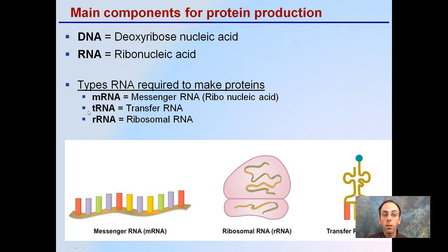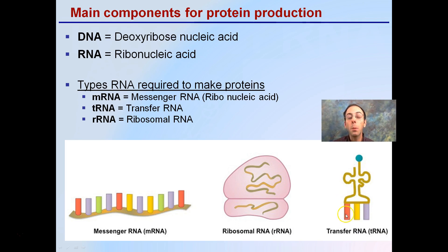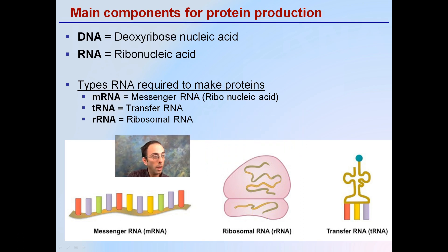Starting with the main components for protein production, there are three key components of RNA that are required to make proteins. mRNA stands for messenger RNA. It's single-stranded, producing a message or a single strand of nucleic acids. tRNA is transfer RNA. Transfer RNA is reading certain regions on the mRNA and transferring an amino acid — grabbing an amino acid, bringing it to the mRNA sequence, and transferring it to develop a polypeptide sequence. rRNA is ribosomal RNA, and it's involved with protein production. The mRNA is basically going and being read across and going to the rRNA.